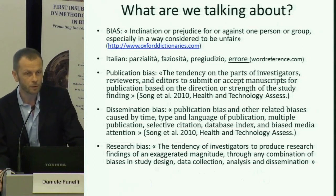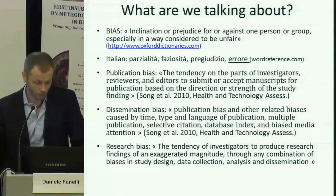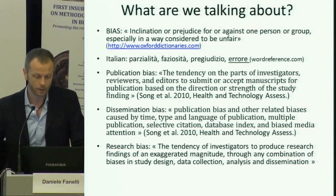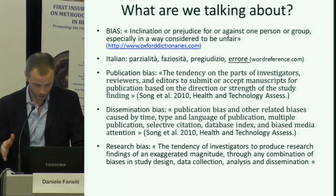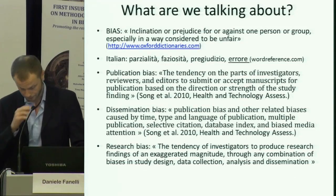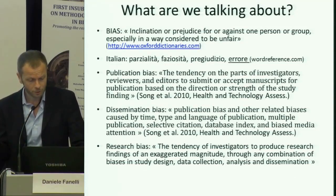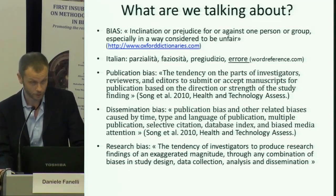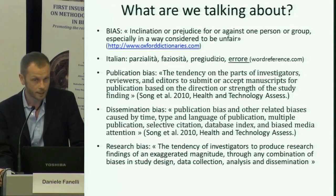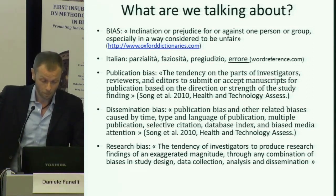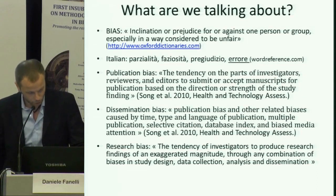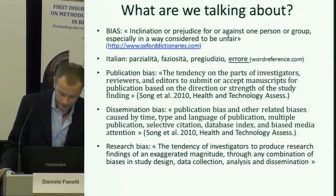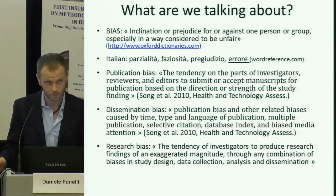Publication bias, referring directly to the systematic review I just mentioned, is defined as the tendency on the part of investigators, reviewers, and editors to submit or accept manuscripts for publication based on direction or strength of the study finding. The systematic review itself will directly tell you that this is a narrow conception of the issues we want to talk about. They would rather talk about dissemination biases, which include publication bias understood in this way, but also other related biases caused by time, type and language of publication, multiple publication, selective citation, database index, and biased media attention.